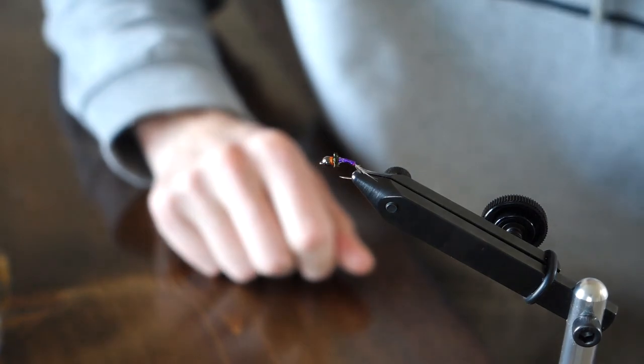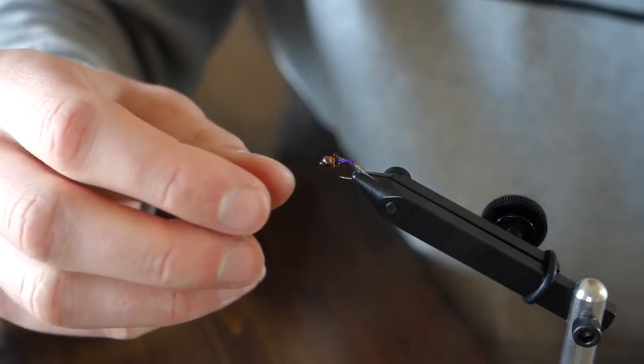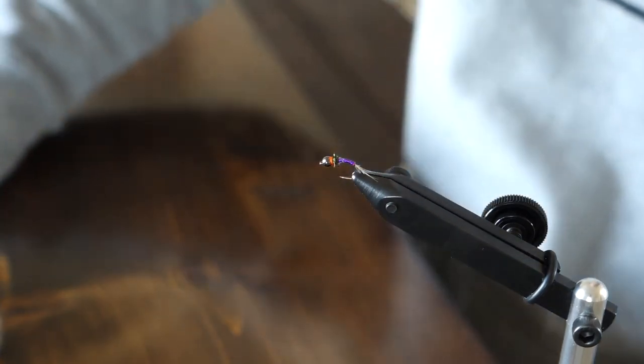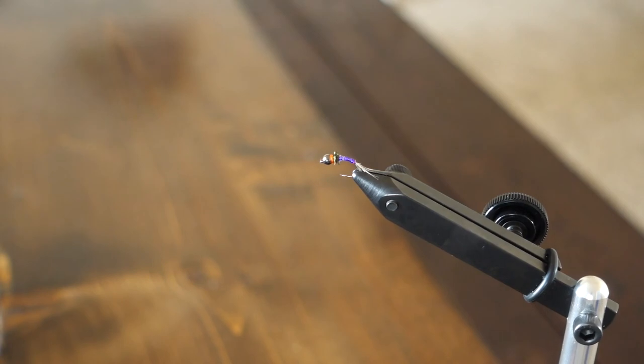So this fly I use primarily with naked nymphing, getting down in the water column. It's a great attractor pattern. Or you can fish it alone. I've been fishing it alone with a lot of success lately. So let's see how it fishes.